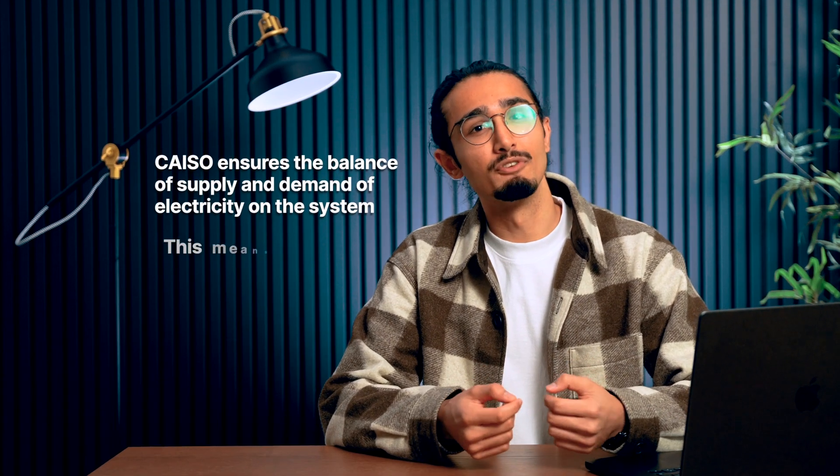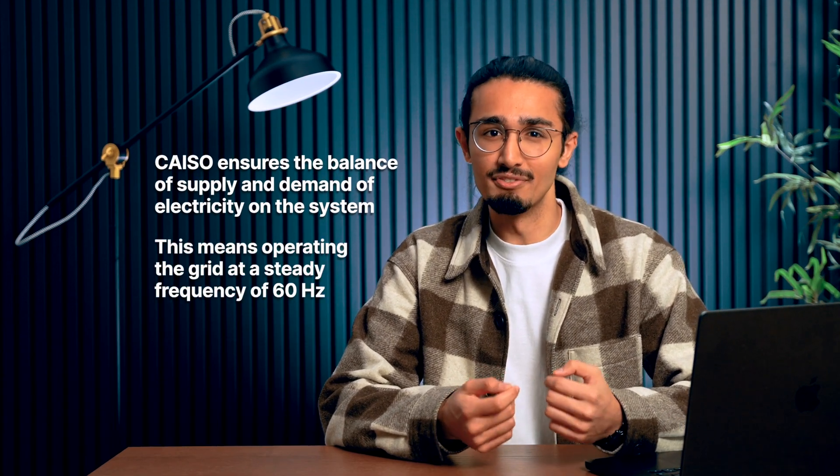The California Independent System Operator, or KAISO, manages the flow of electricity across 80% of California and parts of Nevada. KAISO's main goal is to ensure the balance of supply and demand of electricity on the system, and this means operating the grid at a steady frequency of 60 hertz.